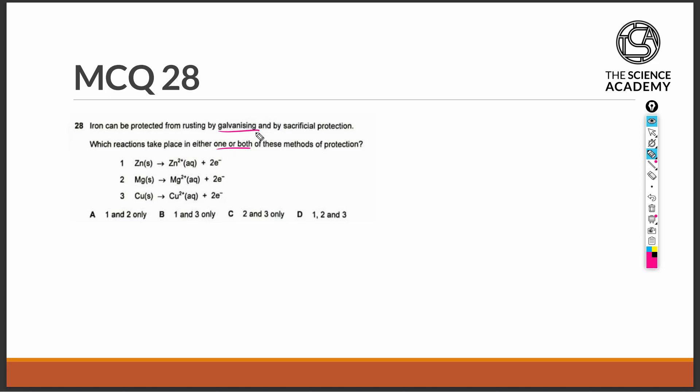Galvanizing is to coat the iron metal with a layer of zinc metal. The mechanism of galvanizing in protecting iron from rusting is actually also sacrificial protection. In this case, it is sacrificial protection by a specific metal, zinc.